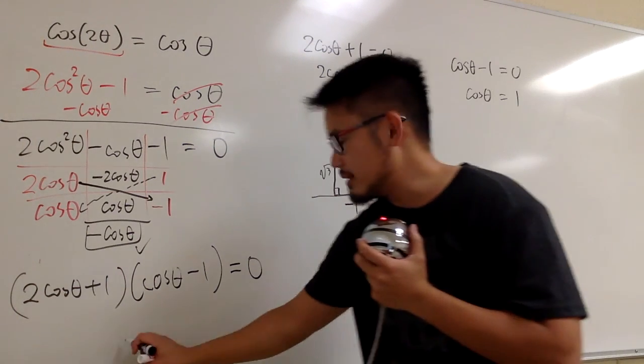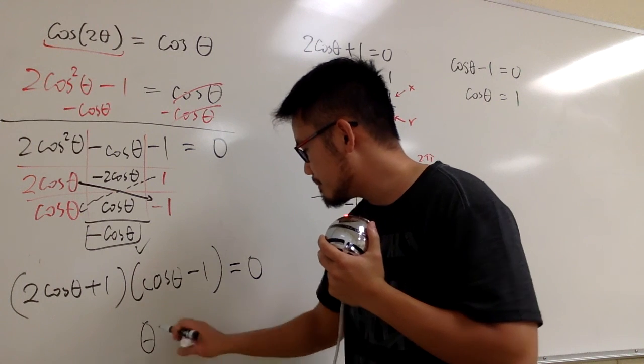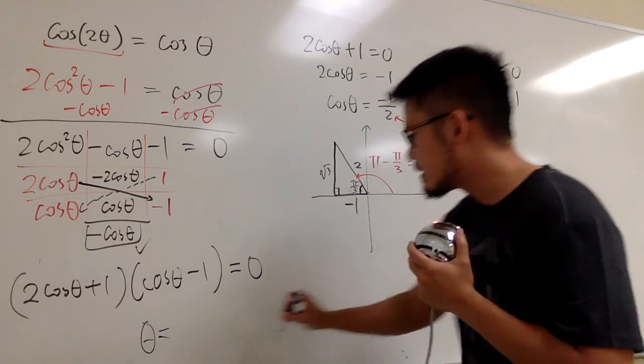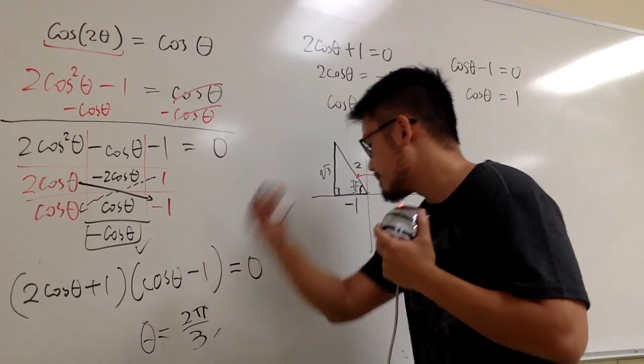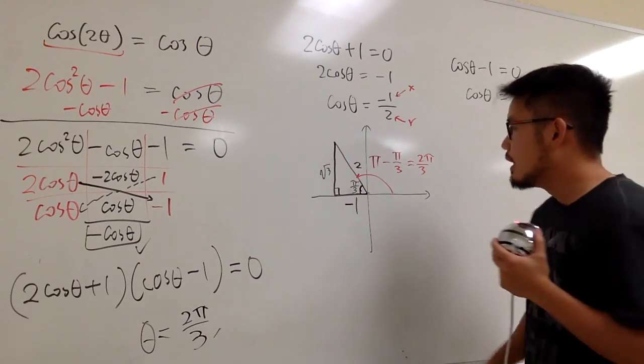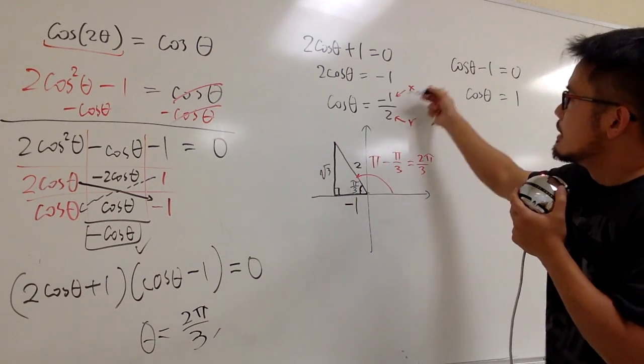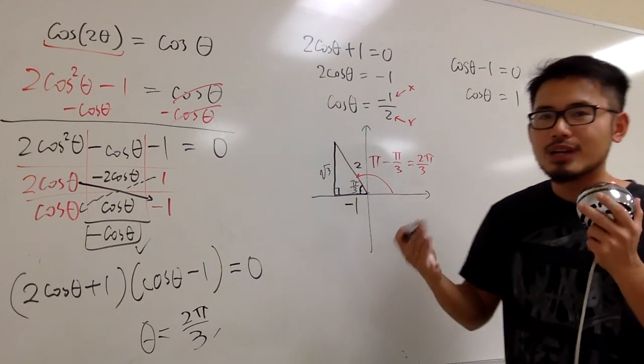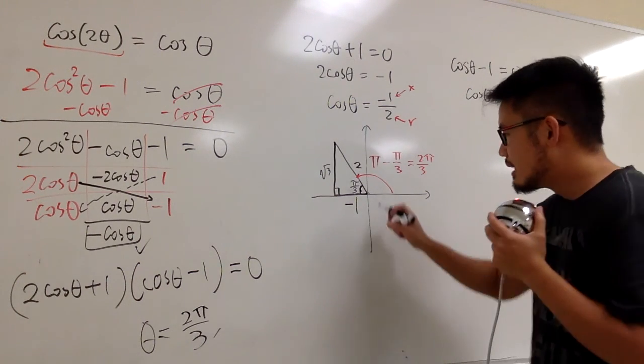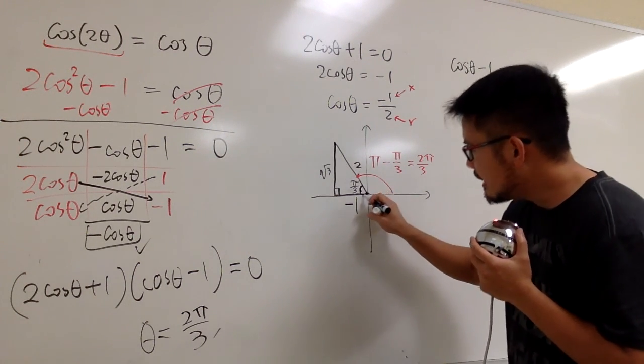So, I will write it down here. Okay. So, we can still see it. θ is going to be the first answer is 2π over 3. Well, what's the next one? Well, x is negative 1. I can also come up with another triangle. I still go like this. Negative 1, right?